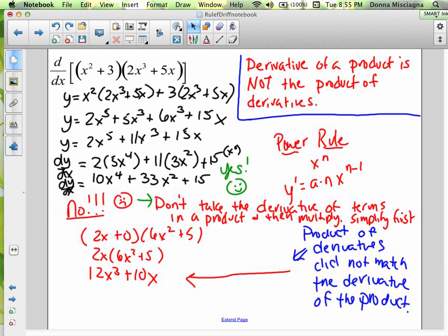Don't take the derivative of terms in a product and then multiply. You've got to simplify first. So notice the product of the derivatives did not match the derivative of the products because this is just wrong. Wrong, wrong, wrong. Let's write a big wrong. Wrong.